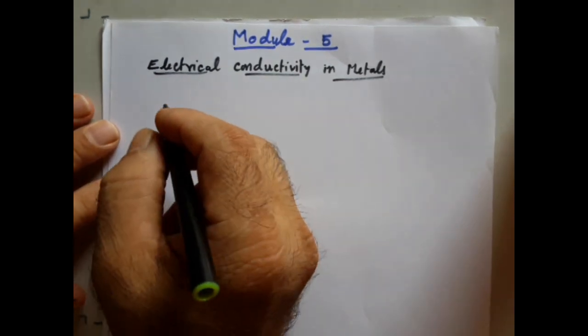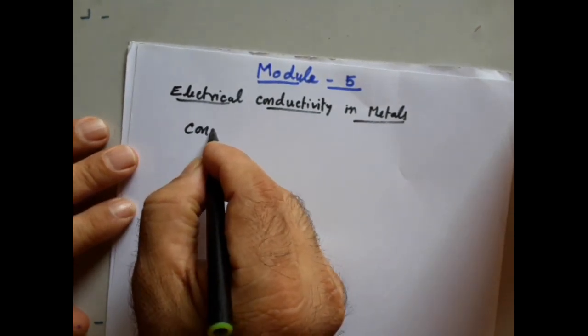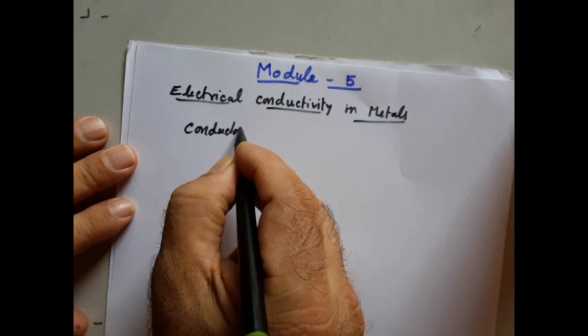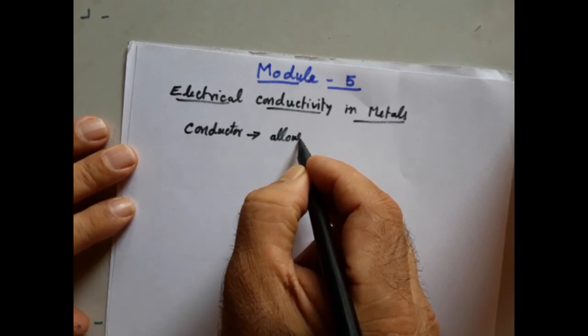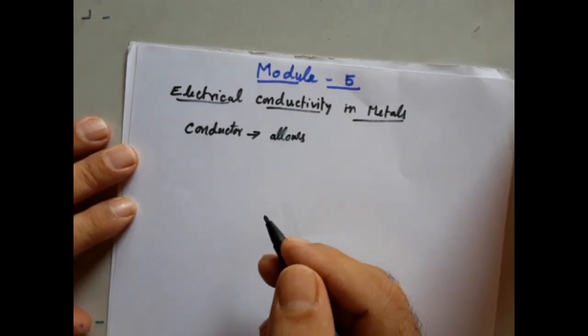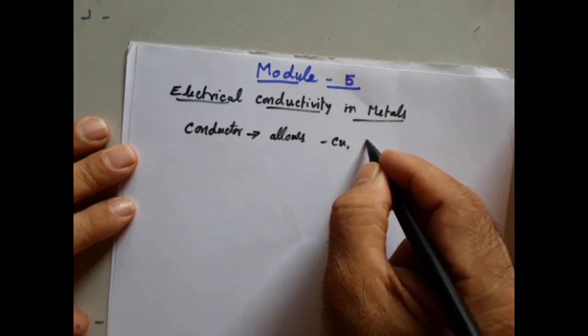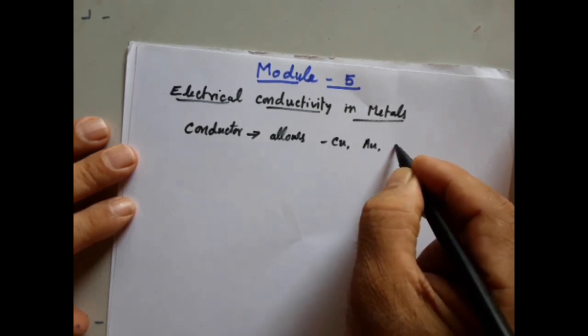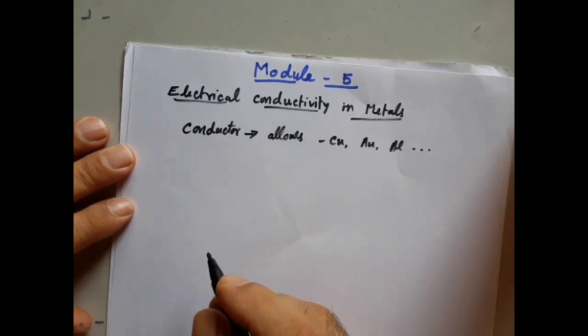First we will try to understand what is Electrical Conductivity. Generally, every material is divided into three categories. The first category is what we call as the Conductor. A conductor is one which allows the charges to pass through from one corner to the other corner. Examples include copper, silver, gold, or aluminium — all such metals are conductors.